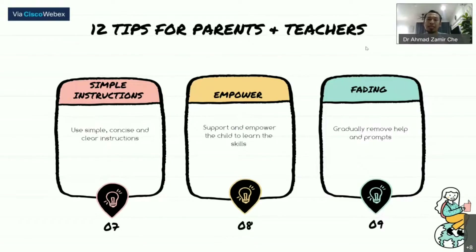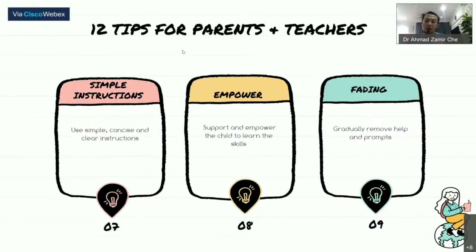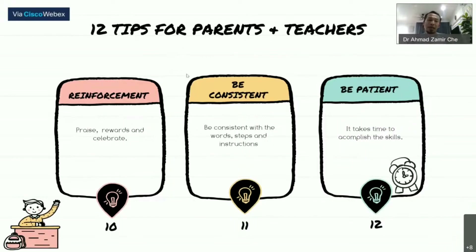The next tip is to empower and support the child to learn the skill — always provide motivation for the child to perform the task. Tip number nine is fading: as your child progresses and becomes more competent in performing the steps, you should gradually reduce the prompt, whether physical or verbal, during the activity.